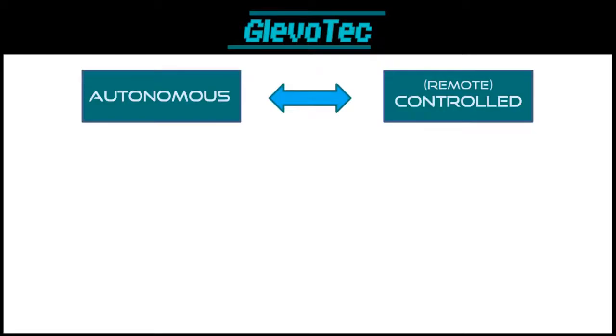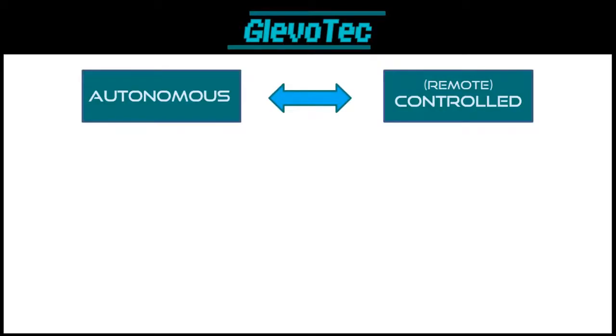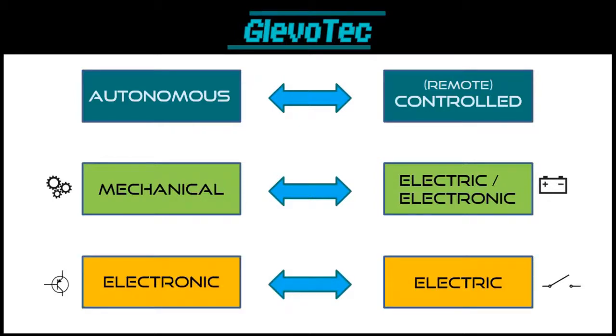In the previous video, Part 1, we saw the main classes which we can divide robots into. We saw the difference between autonomous and controlled robots, and mechanical versus electric and electronic. If you haven't seen it yet, make sure to check out Part 1 — I've put a link in the description below.